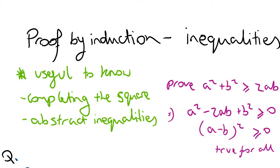Here I'm going to look at proof by induction — the last type. I've already looked at proof by induction using series and proof by induction where you're asked to see if something is divisible by another number. Here we're going to be looking at inequalities. A few things useful to know: completing the square, and how to deal with abstract inequalities. For example, to prove a² + b² > 2ab, rearrange to get a² - 2ab + b² > 0, which is (a - b)² > 0 — and anything squared is always positive, so it's true for all values of a and b.